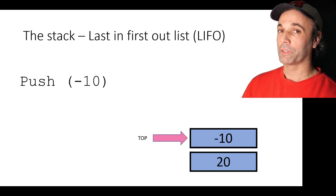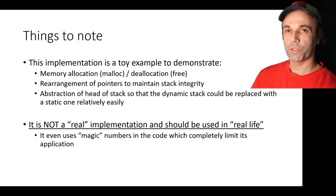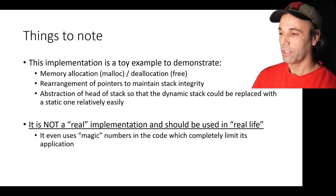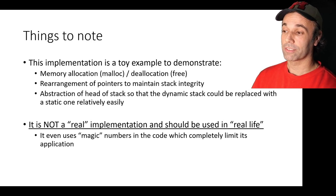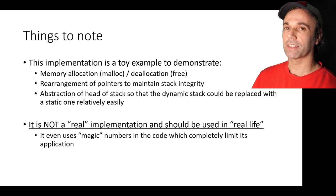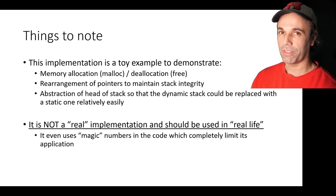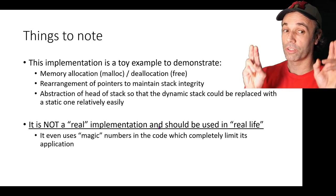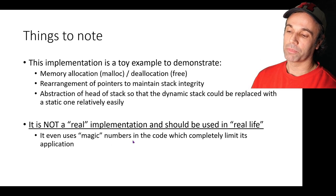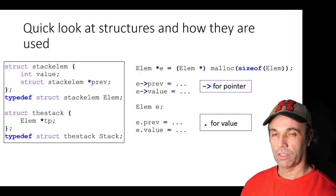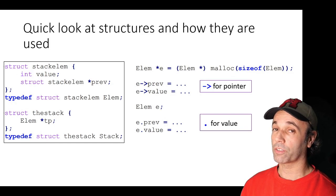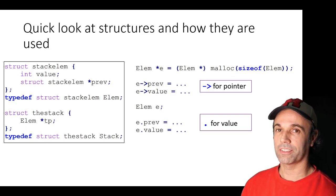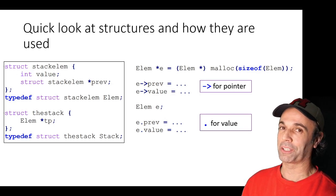Now let's work out how we do that in C with the linked list. Just a few things to note about this implementation before we get on with it. This is a toy example to demonstrate memory allocation with malloc, deallocation with free, rearrangement of pointers to maintain stack integrity — that's key here — and abstraction of the head of the stack so that a dynamic stack could be replaced with a static one relatively easily. It is not a real implementation and should not be used in real life. It even uses magic numbers in the code which completely limit its application.